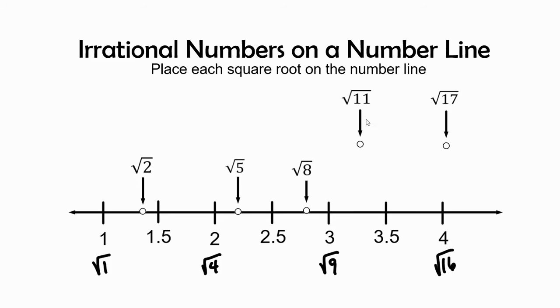Now radical 11 - we ask ourselves, is it right in the middle between radical 9 and 16? Is it closer to 3 or closer to 4? In this case, it's a little bit closer to 3, so it's probably right here. It's a pretty decent approximation, probably around 3.16 or 3.2, somewhere in that area for the equivalent of radical 11.